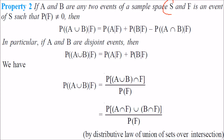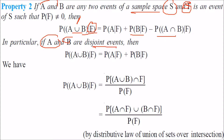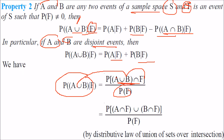If A and B are any two events of sample space S, and F is an event of S, then P(A∪B|F) equals P(A|F) plus P(B|F) minus P(A∩B|F). P(A∪B|F) is simply P((A∪B)∩F) divided by P(F), and distributing the intersection gives P((A∩F) ∪ (B∩F)) divided by P(F).